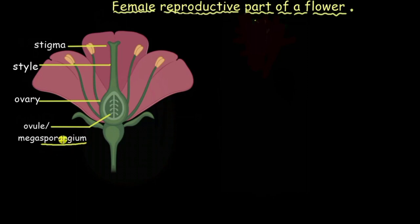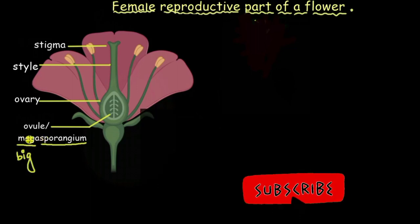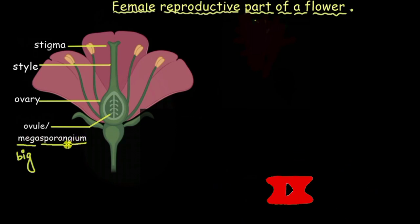In this case the female spore. And it is called mega which means big because it is bigger than the male spores which are called microspores. And they grow in microsporangium. We have already discussed about it in our previous videos.